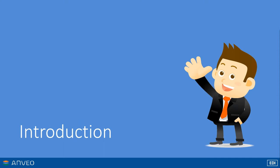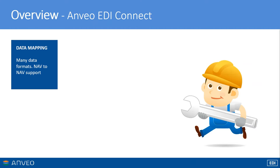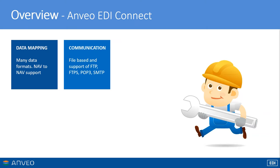We will start with a brief introduction into our module. Our module consists of several components. We have data mappings, where you can map data from XML, X12, IDFact, CSV, text-based formats, and so on, to data in NAV or vice versa. You can also map data between NAV tables.